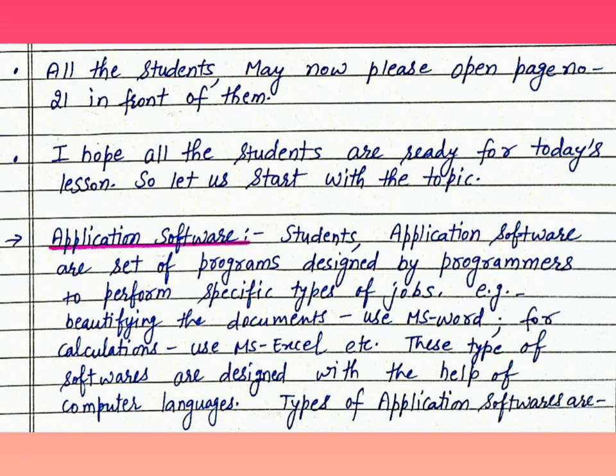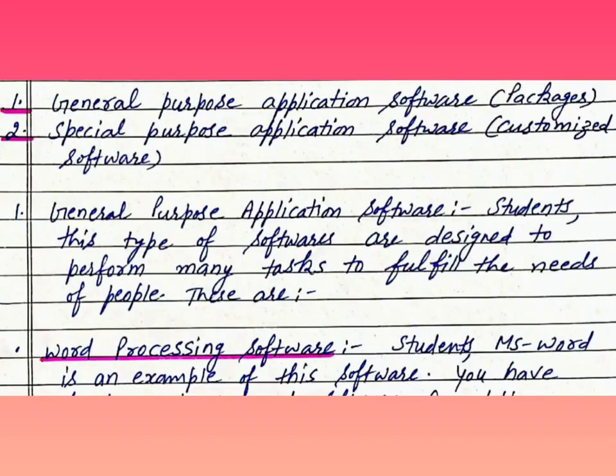Application software. Students, application software are a set of programs designed by programmers to perform specific types of jobs. For example, beautifying documents — use MS Word; for calculations — use MS Excel, etc. These types of softwares are designed with the help of computer languages.